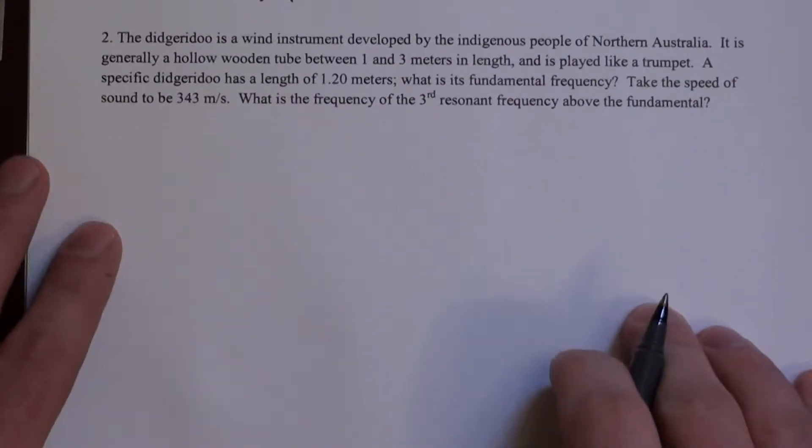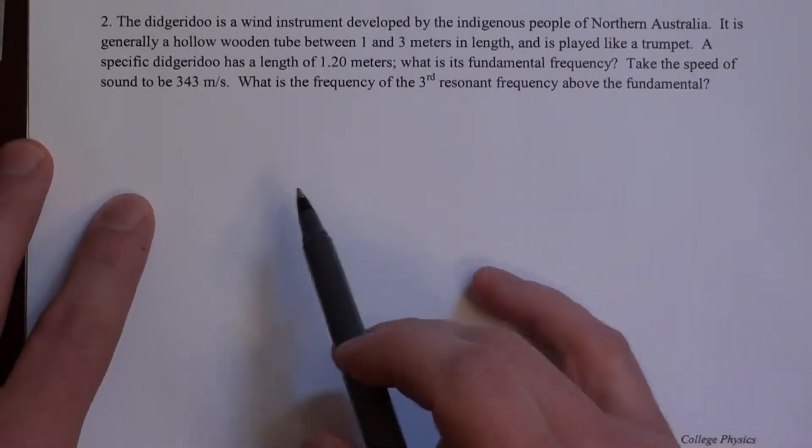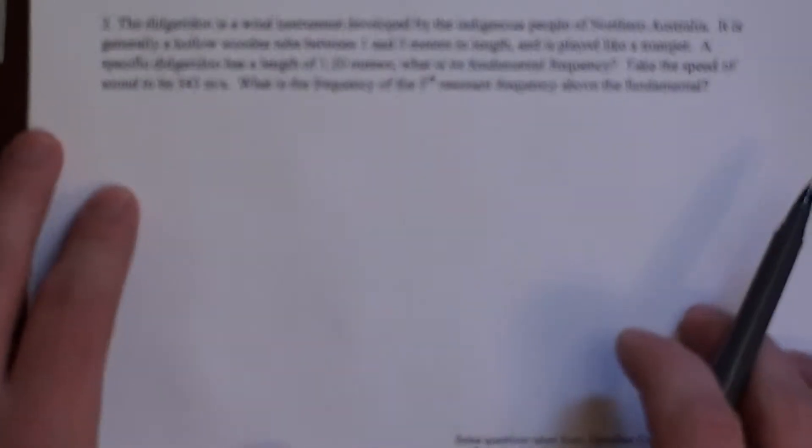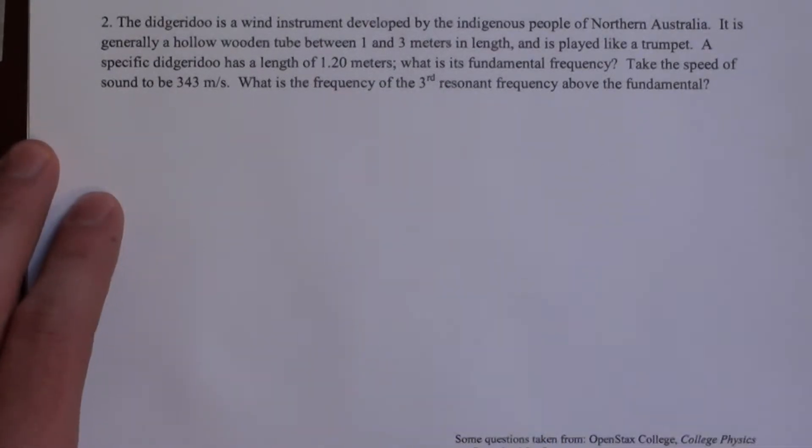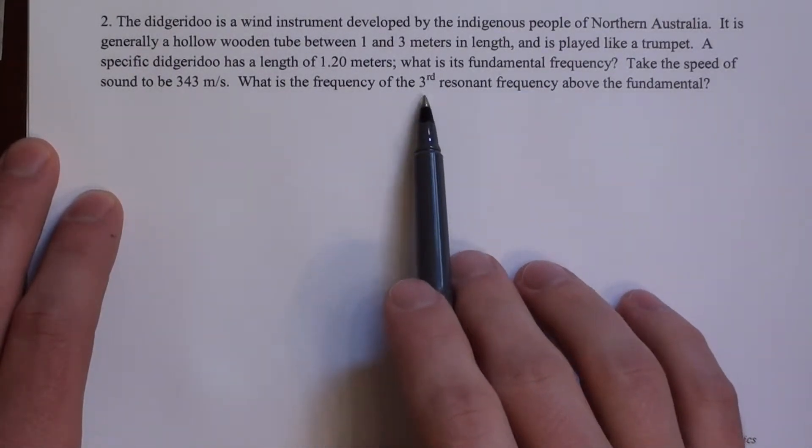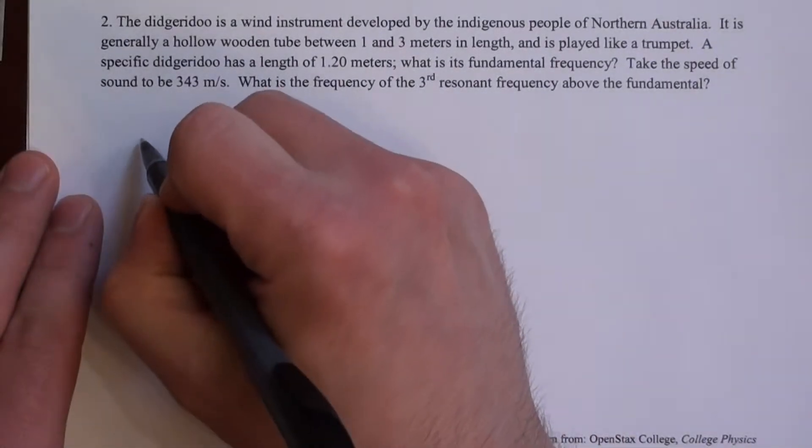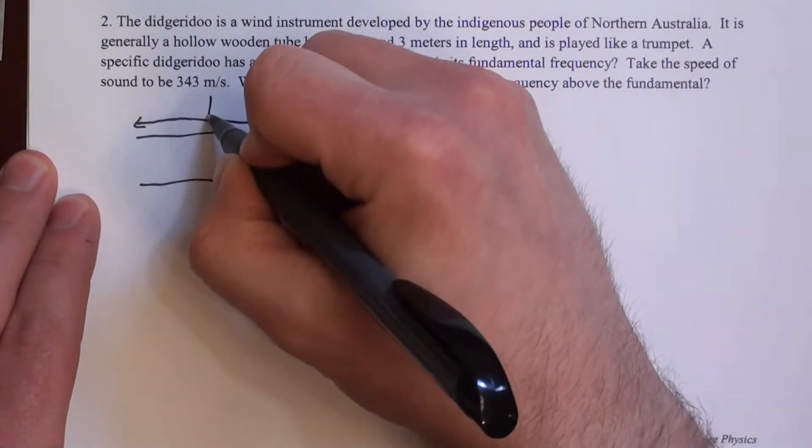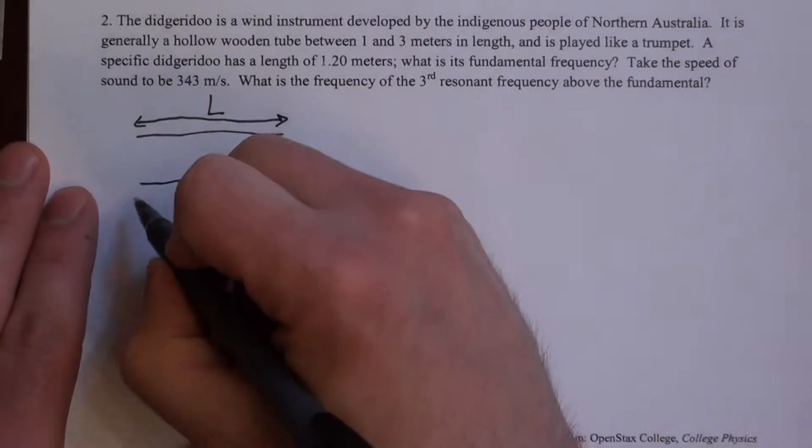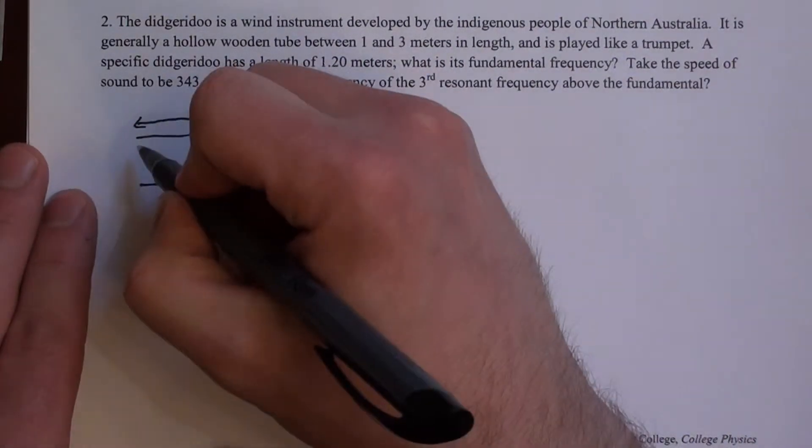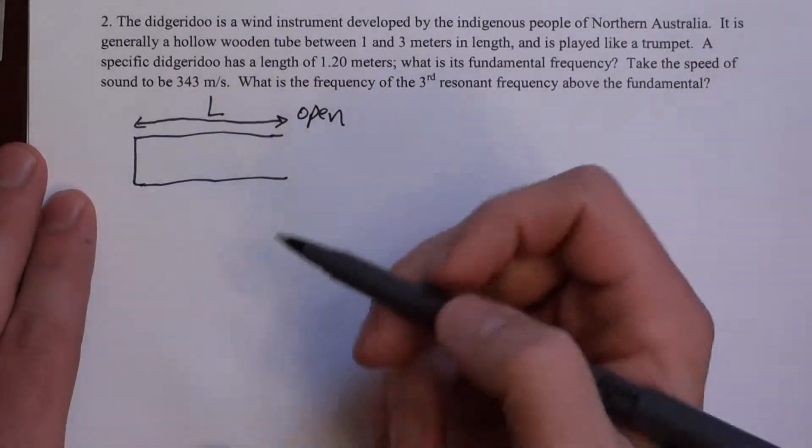So the second question here relates to a wind instrument. The didgeridoo is an instrument developed by the indigenous people of northern Australia. It's generally a hollow tube between 1 and 3 meters, and it's played like a trumpet. That's important. So a specific didgeridoo has a length of 1.2 meters. We want to know what is its fundamental frequency and also what is the frequency of the third resonant frequency above the fundamental. So let's draw a tube.